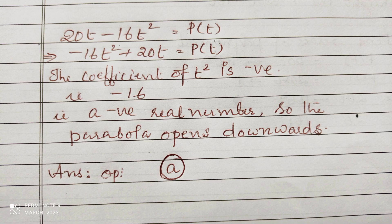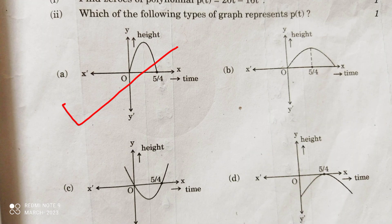A negative real number is -16. So the parabola opens downward only. Therefore, the option for this question is a.